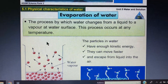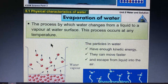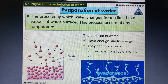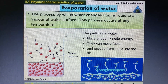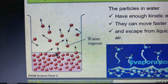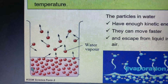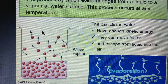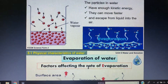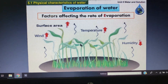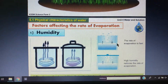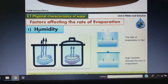Evaporation is a process that occurs only on the surface of water. It can occur at any temperature. It occurs because all the particles on the surface have a certain average kinetic energy. As they experience continuous collisions with air particles, they gain extra energy compared to molecules at the bottom layer. Since they have extra energy, they can escape into the air and form vapor.